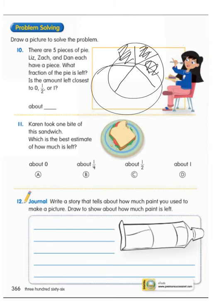Number 11. And make sure you draw that picture. Karen took one bite of this sandwich. Which is the best estimate of how much is left? Is it about zero left? About one fourth left? About one half left? Or about one left? Like the whole thing?